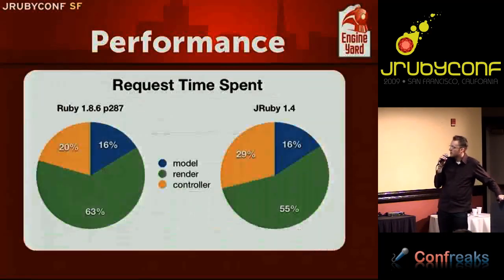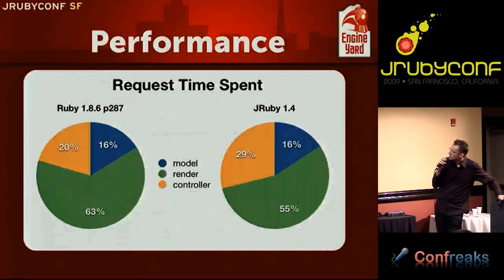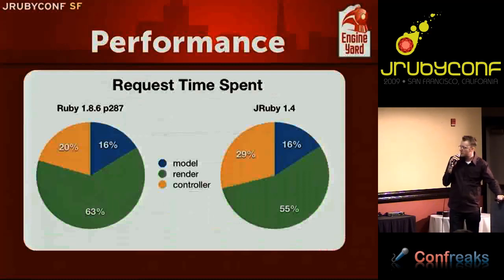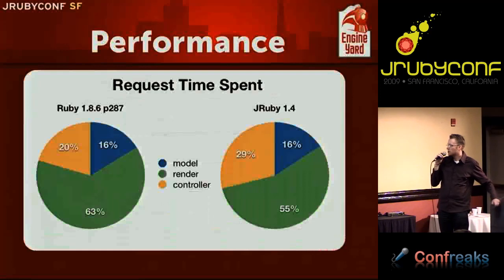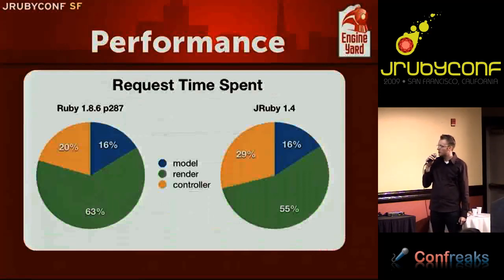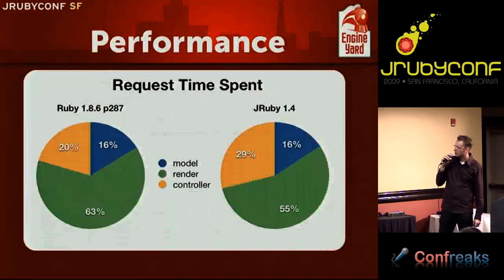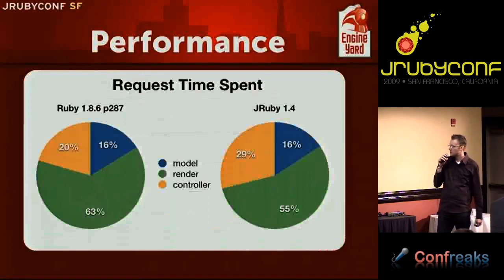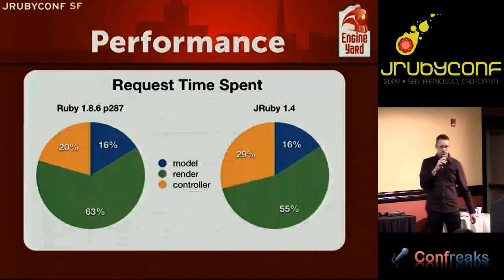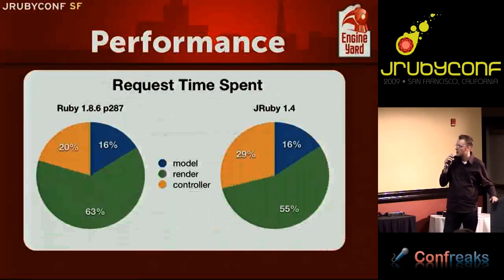Here's a breakdown of how request time is spent between the three components of Rails. The controller is taking a bit more time on the JRuby side than on Ruby 1.8.6. But there's also a huge swath of rendering time that's the case for both interpreters — so there's something to dig into on the controller side specifically for JRuby.